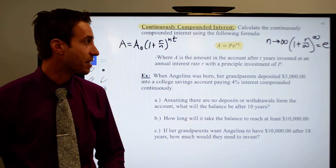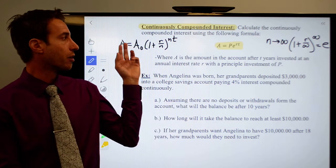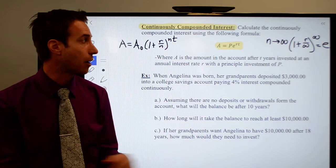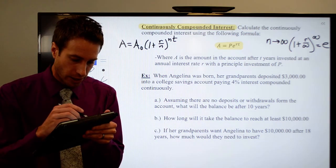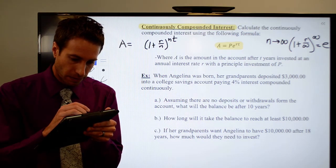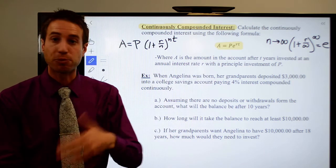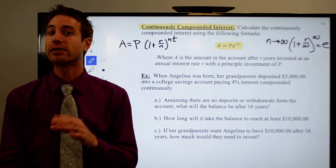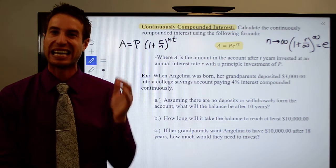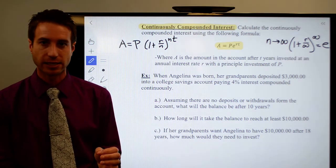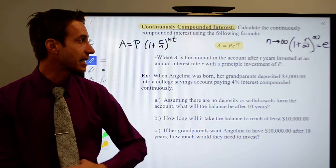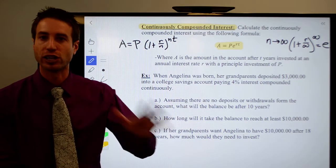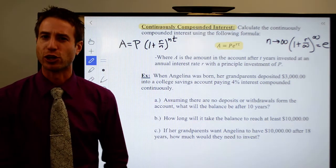All of the variables are essentially the same as before, just fewer of them. A is the final amount. P is the principal — the initial investment. R is the interest rate; you must convert the percent to a decimal — do not plug the percentage in directly. And T is the time you are accruing that interest — how long before you withdraw the money.